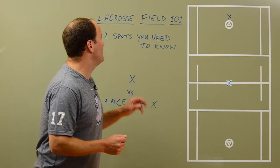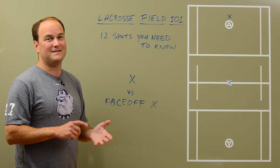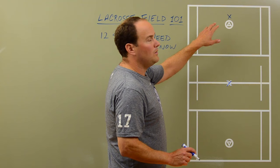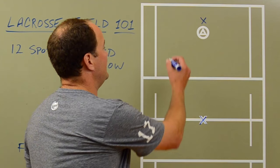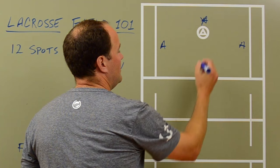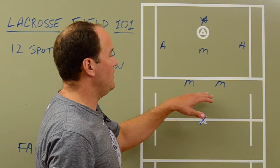We want to go over the 12 spots on the field that you need to know. The first two we want to go over — and this is a little bit confusing — it's the X versus the face-off X. What's known as the X is the area behind the goal. If we had three attackmen in the game, we might have them lined up in a formation with our three middies, and we'd call this a 2-3-1 offense.